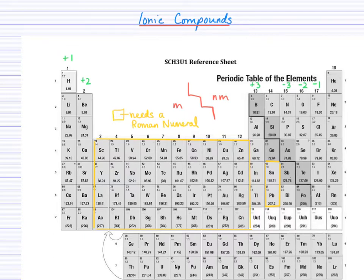So a quick refresher, your periodic table reference sheet. Remember the charges on groups 1, 2, 13, 15, 16, and 17. Remember the metals are on the left side of the staircase, non-metals are on the right. And anything in the yellow box needs a Roman numeral, except for zinc, which has a 2 positive charge, and silver, which has a positive 1 charge.